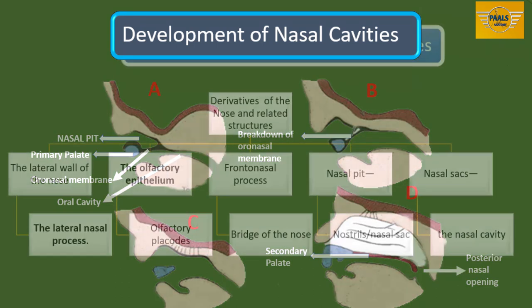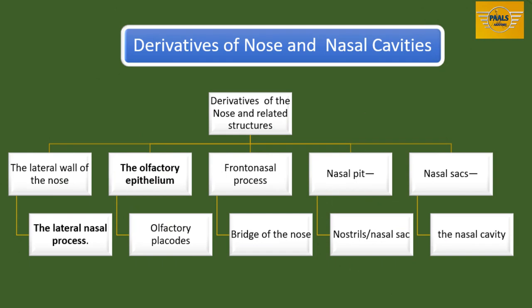To summarize the derivatives of the nose and nasal cavities: the lateral wall of the nose is derived on each side from the lateral nasal process. The original olfactory placodes form the olfactory epithelium. The frontonasal process forms the bridge of the nose. The nasal pit eventually gives rise to the nostrils, and the nasal sacs elongate to give rise to the nasal cavities.